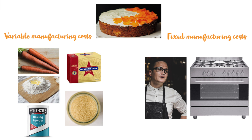Now, if she wants to calculate the cost of the cake using marginal costing, then she will take into account only the variable manufacturing costs, such as the cost of butter, flour, carrots, eggs, baking powder, sugar and any other variable manufacturing costs. She will not take into account the lease rent on her ovens, the salary of the chef who is employed on a fixed monthly salary, and any other fixed manufacturing costs when she is calculating cost under marginal costing.